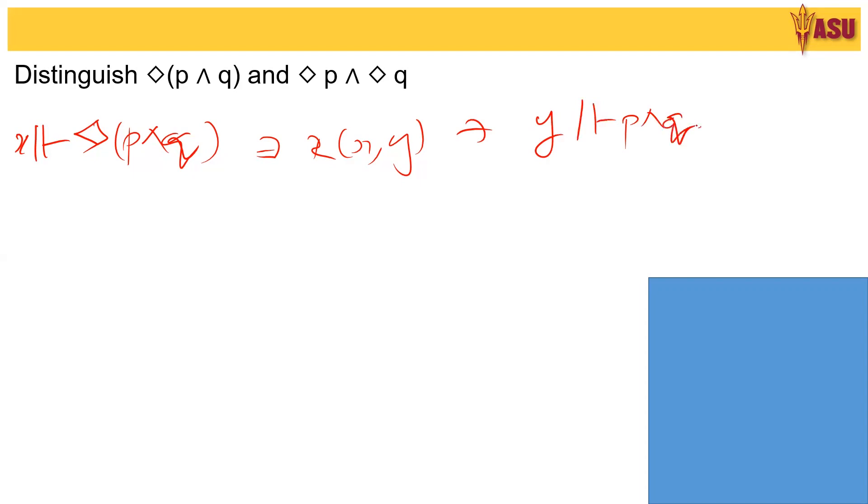Now clearly if Y has P and Q then Y has P and Y has Q. This implies X belongs to diamond P and X belongs to diamond Q or X belongs to diamond P and diamond Q. This is an implication.